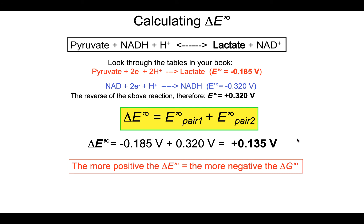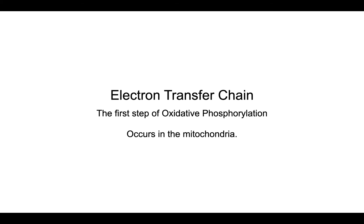The more positive the change in reduction potential, the more negative the delta G of that reaction. In this case, we have a fairly positive reduction potential, so we have a fairly negative delta G. This reaction, under standard conditions, is exergonic. And most importantly, all exergonic reactions release energy, and that energy can be used to do work. That's the whole point of the electron transport chain — it's a series of exergonic redox reactions that release energy used to do something specific.